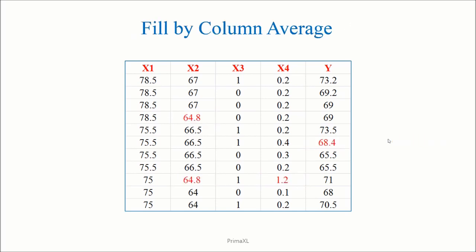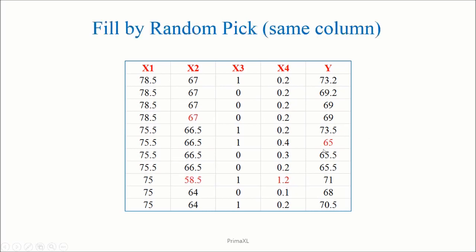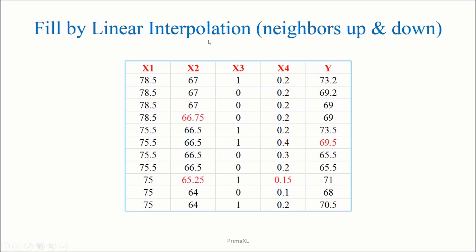One of the ways of filling the missing data is to use the column average. Here we have an example — it seems like a reasonable method. Another way is to pick random values within the same column to fill the missing data. Here you can see an example. Finally, we can also fill the missing data by linear interpolation. This is basically the same as taking the average of the neighboring cells up and down.